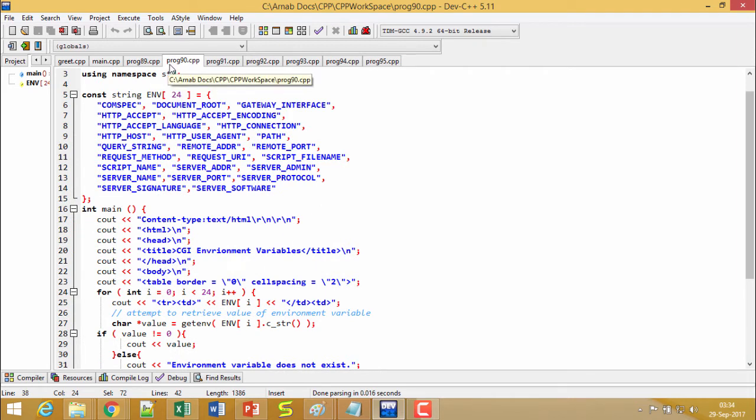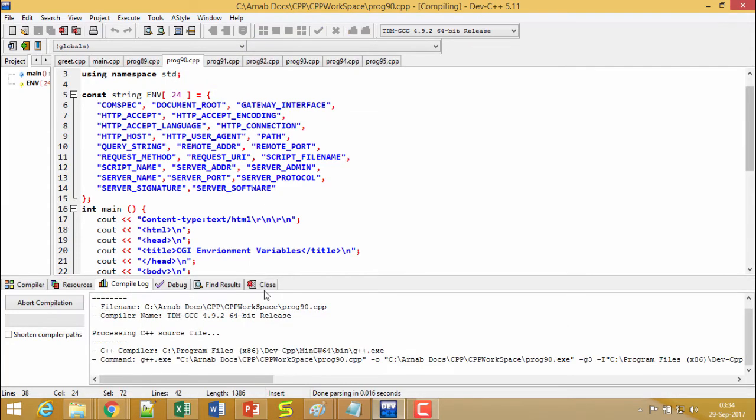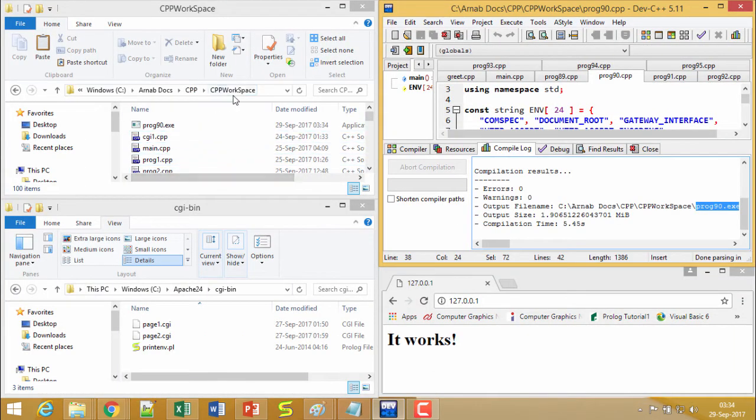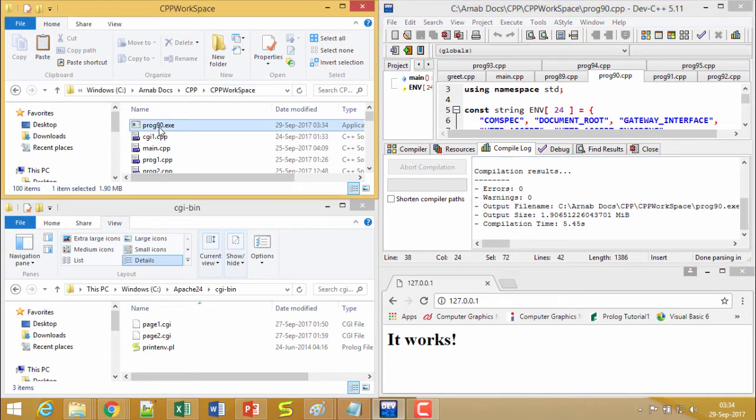Our program name is prog90.cpp. For its execution, let us go for compilation. If there is no error, then we shall have successful completion of the compilation, and that has been indicated here. The executable file name is prog90.exe. If I come to my workspace, I have got this prog90.exe.